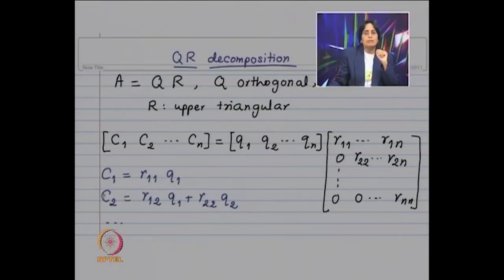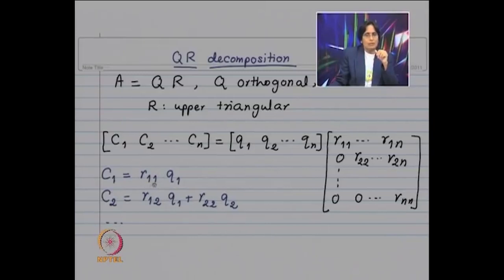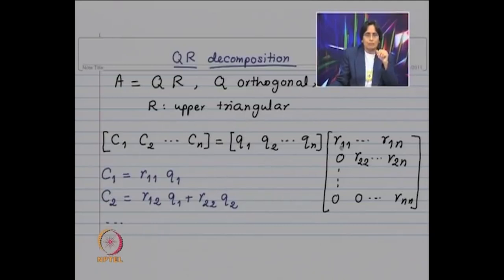So mod r11 equals norm of C1. Thus for r11 we have a choice: we can either choose it to be plus norm of C1 or minus norm of C1. Once we determine r11, Q1 is going to be C1 divided by r11. So we have determined Q1 and r11. Now look at the second column — we need to determine r12, r22, and Q2, where Q1 is already determined.